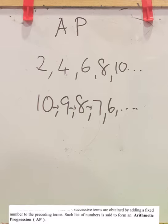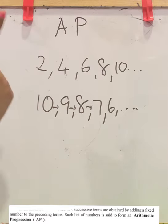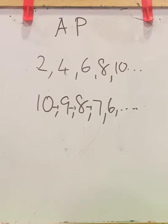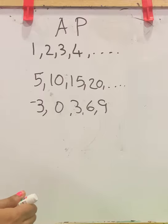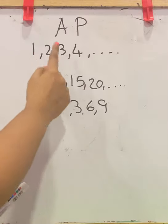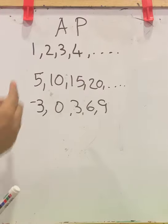Arithmetic progression is a list of numbers or a sequence of numbers in which each term is obtained by adding a fixed number. There is a fixed number added to each term, and that sequence is called AP or arithmetic progression. Let us check some of the arithmetic progressions. These are all sequences with a particular order, and this is AP because it has a fixed number added to following numbers from previous numbers.